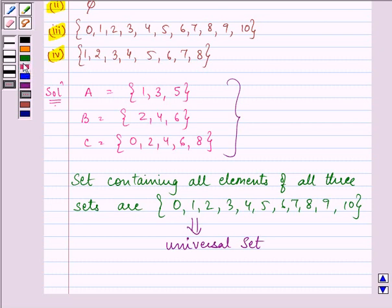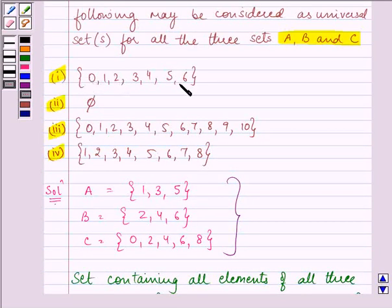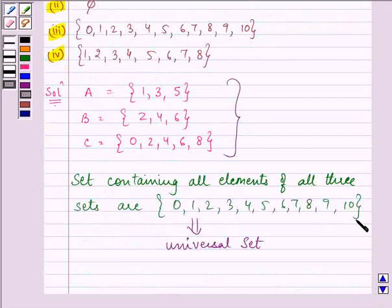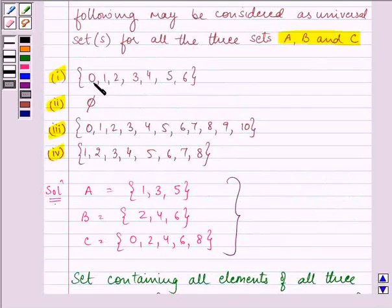Right, now, starting off with the first point, it is asking whether part 1 is a universal set. Is the universal set which we have found out same as in part 1? No. Same as in part 2? Obviously no. Same as in part 3? Yes. Same as in part 4? No.